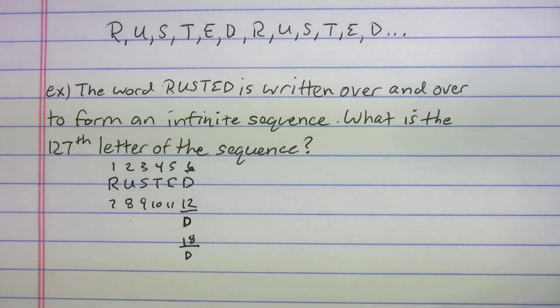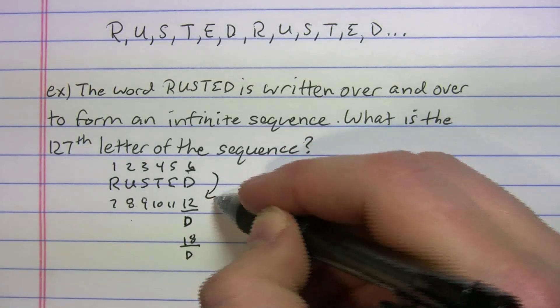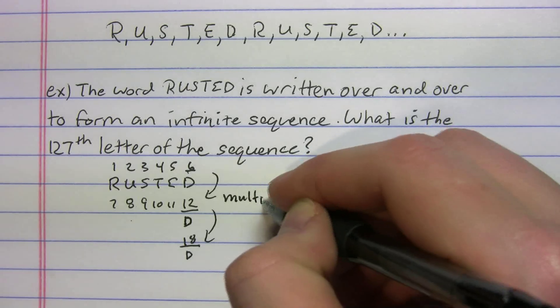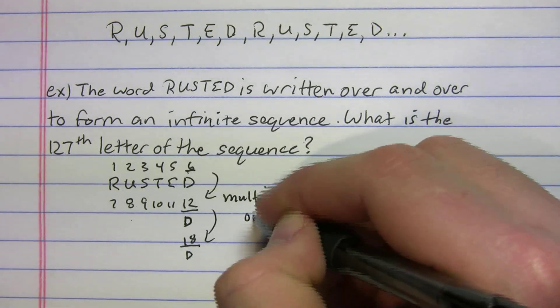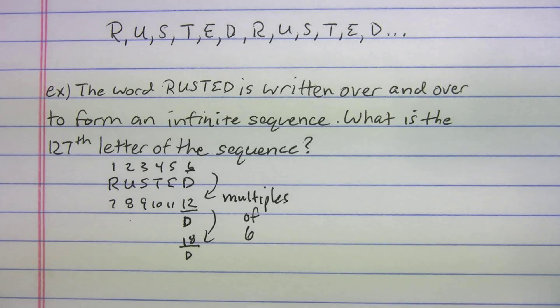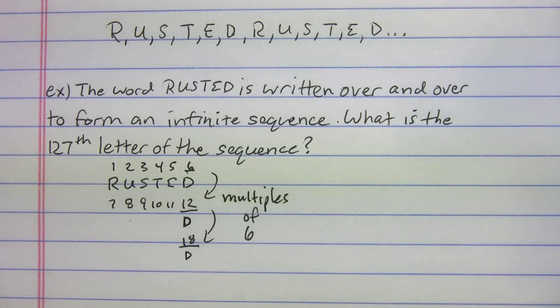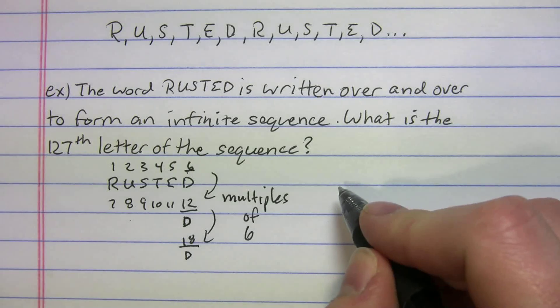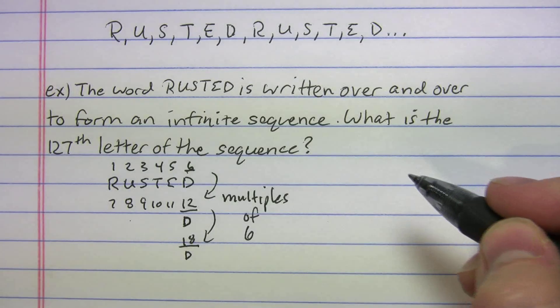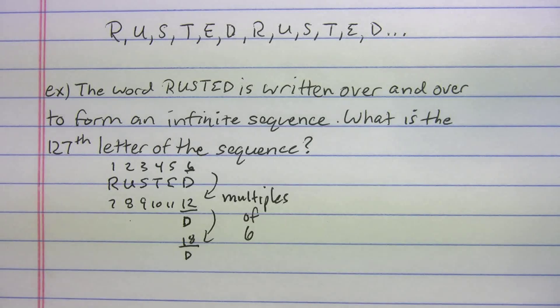They're all multiples of six, so they're all going to be D's. Why does that help us out? We want to find a multiple of six that's really close to 127. So what some of you guys might have thought is that if we know the 12th spot is a D, then the 120th should also be a D. If you ask yourself, is 120 divisible by six? Yes, 120 is divisible by six, so we know 120 is a multiple of six, so it's going to be a D.